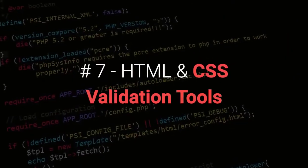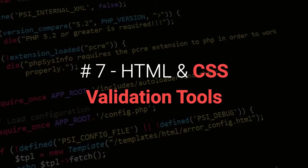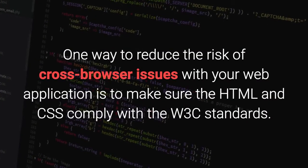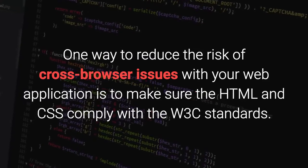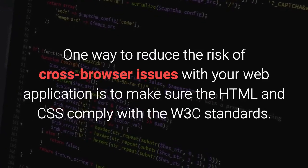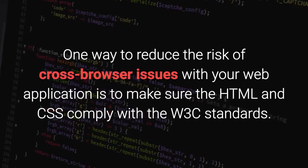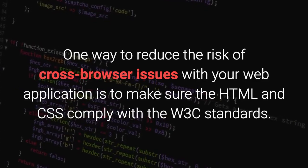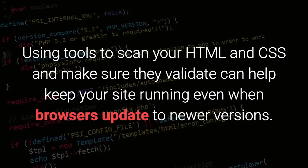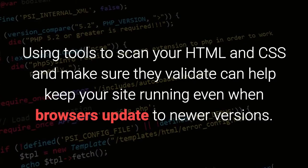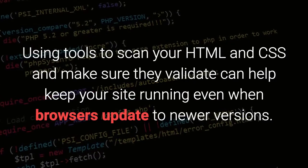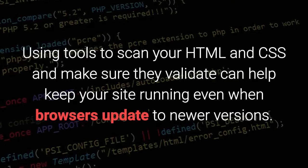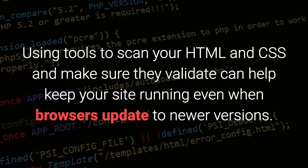Number seven: HTML and CSS validation tools. One way to reduce the risk of cross-browser issues with your web application is to make sure that HTML and CSS comply with the W3C standards. Using tools to scan your HTML and CSS and make sure they validate can help keep your site running even when browsers update to newer versions.